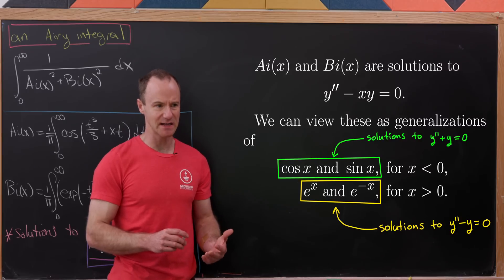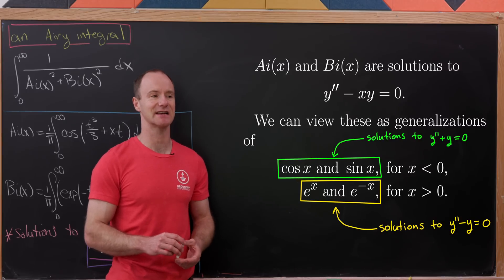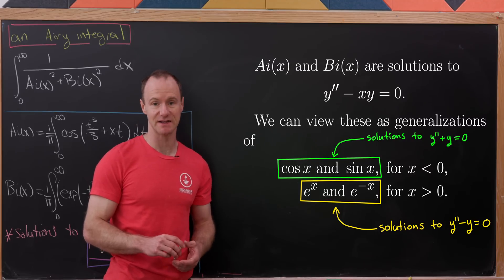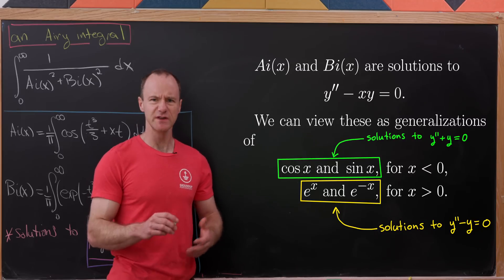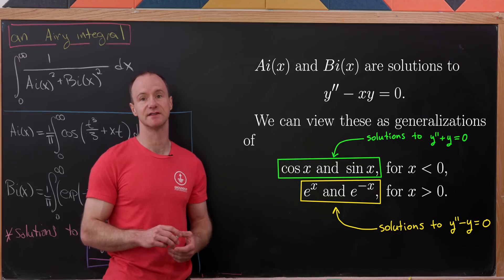But if x is positive, you can think about this as a generalization of e to the x and e to the minus x because those are solutions to the differential equation y double prime minus y equals 0. So this is some sort of simultaneous generalization of those two classes of functions.